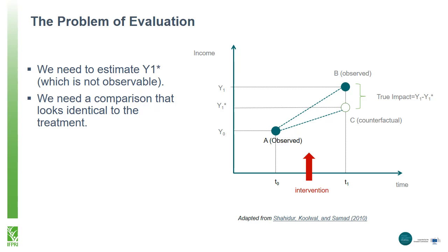Viewing this another way, the y-axis represents income and the x-axis time. We have observations of individuals pre-intervention, shown by point A, and post-intervention, shown by point B. The counterfactual, point C, is the gain in income if the intervention had not taken place. Therefore, the impact would actually be only the difference between y and y-star. Because the counterfactual is not observed, we need a comparison group that is identical to the treatment group to estimate y-star, which we cannot observe directly.